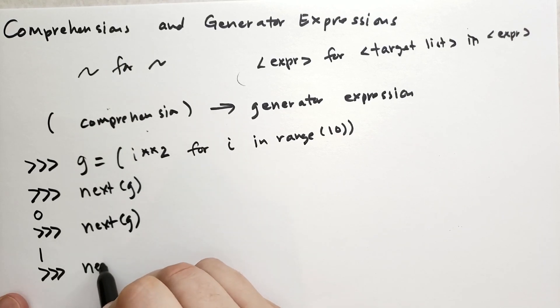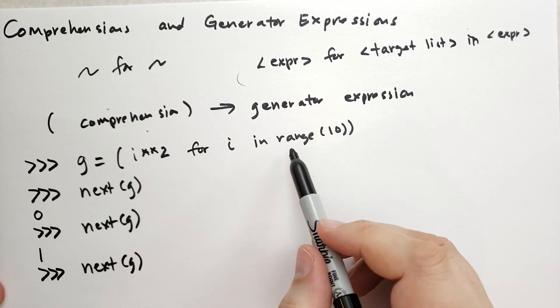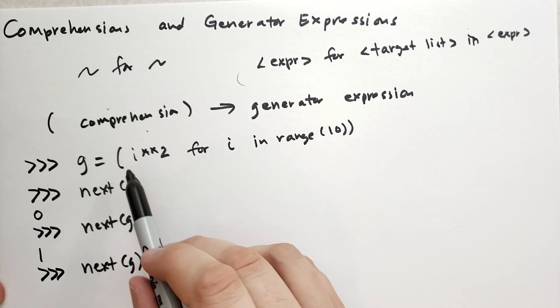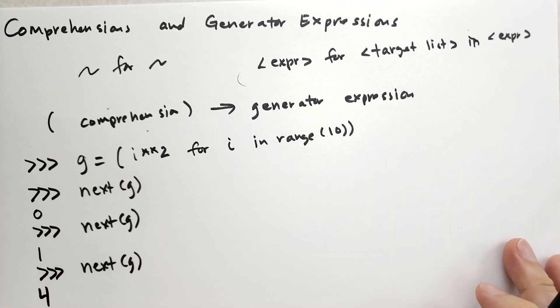If we do it a third time, then the next item is 2 assigned to i, and then 2 raised to the second power is going to give us 4, and so on.